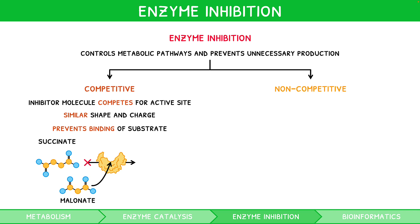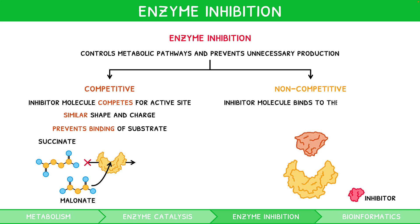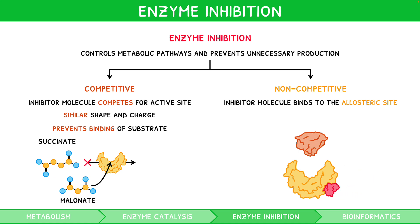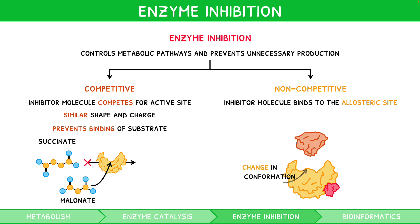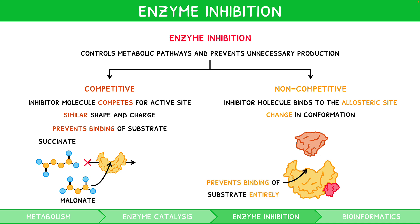In non-competitive inhibition, the inhibitor molecule binds to the allosteric site. This is a second binding site on an enzyme, which when bound to causes a change in conformation of the active site. This therefore prevents the active site from binding to the substrate entirely, inhibiting the reaction indirectly.